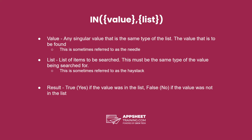The value is sometimes called the needle, and the list is sometimes called the haystack. This is because we're looking for our needle inside our haystack. The result is true or yes if the value was in the list, but false or no if the value was not in the list.